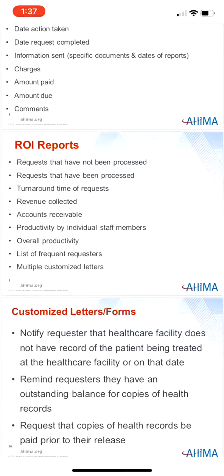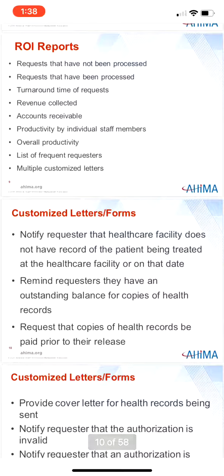Moving to page 89, we talk about different kinds of release of information reports. Reporting is an important part of the ROI system — reports are used by ROI or HIM staff and to communicate with requesters. In a paper environment, ROI coordinators can generate a list of health records to be pulled, sorted into terminal digits or other numeric or alphabetic order, to facilitate the retrieval process. Customized letters are critical to the ROI system and may be used to notify the requester that the healthcare facility does not have a record of the patient being treated at the facility or on that date.